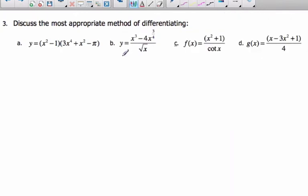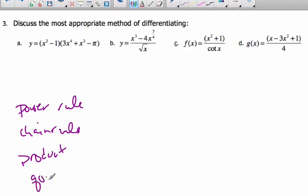Okay, so at this point we have done power rule, chain rule, product rule, and the quotient rule. And these are the four main rules for finding derivatives.